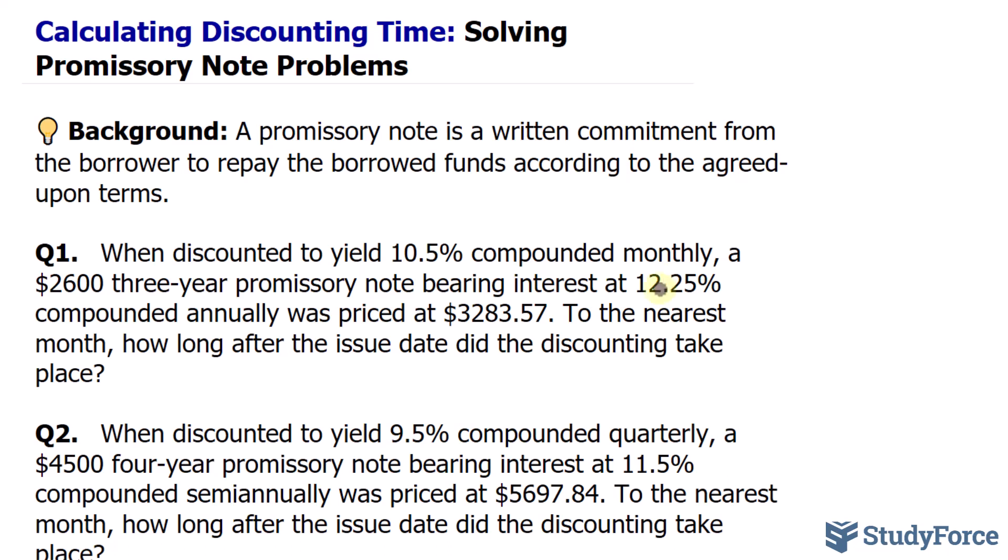So you borrowed $2,600 and the value at which you borrowed this money was 12.25% compounded annually. We don't know how much that value matured to after three years, but we do know that the value discounted to $3,283.57 for a certain amount of time at a rate of 10.5%.